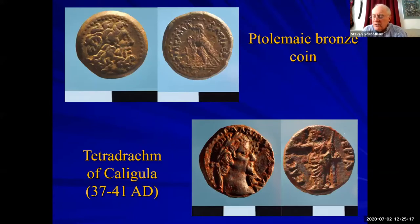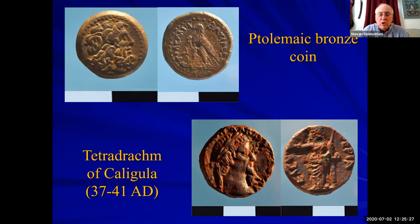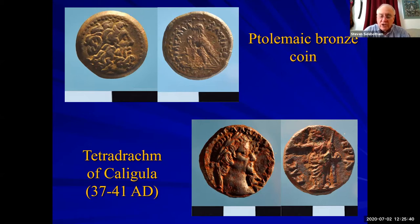Coins: interestingly, we don't have that many in all of the seasons — maybe between 800 and 900, which isn't really that many from a site like this. They're for the most part Ptolemaic issues by that dynasty ruling Egypt from a decade or two after the death of Alexander the Great to about 30 BC, when the Romans took over Egypt. The vast majority of the coins we get are Roman, and there's an example of one of them — the Roman Emperor Caligula.